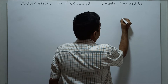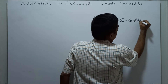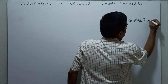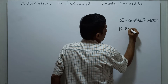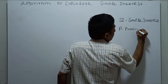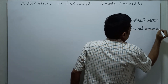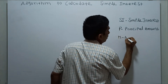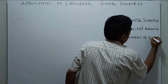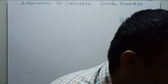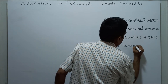SI stands for simple interest. P stands for principal amount. N stands for number of years. R stands for rate of interest.